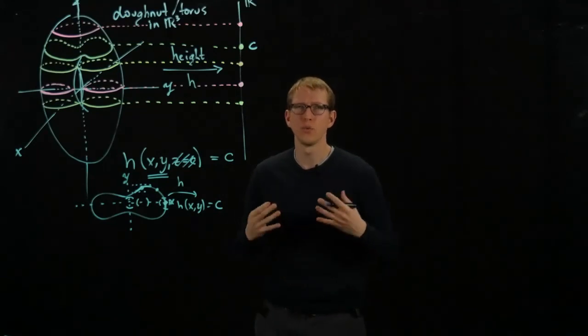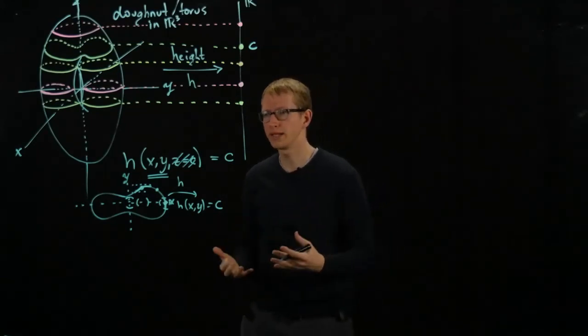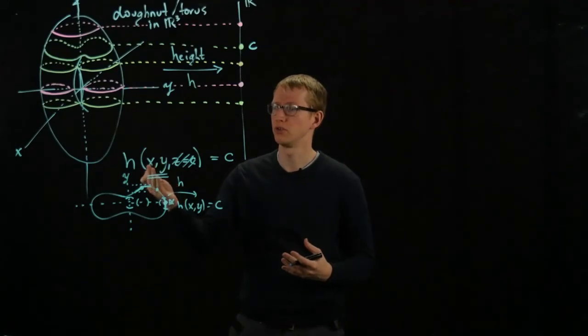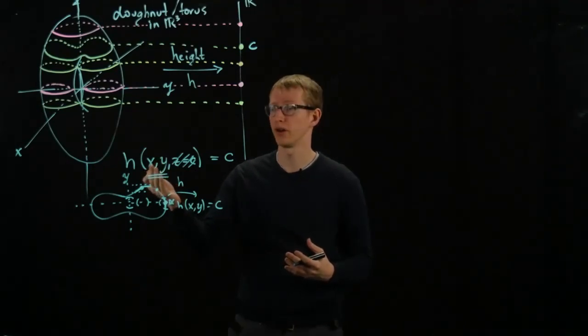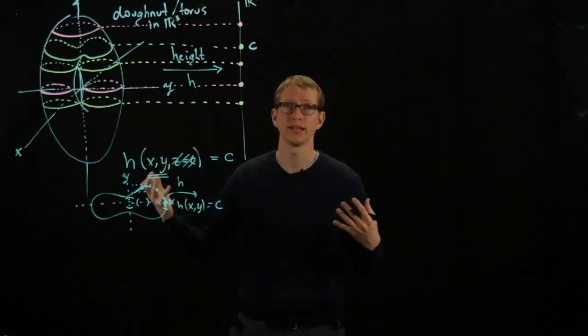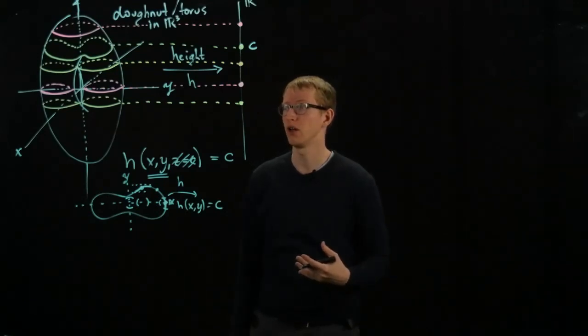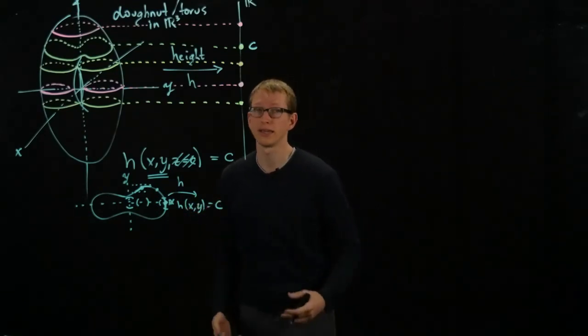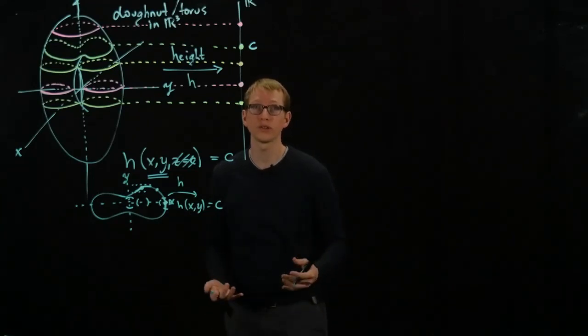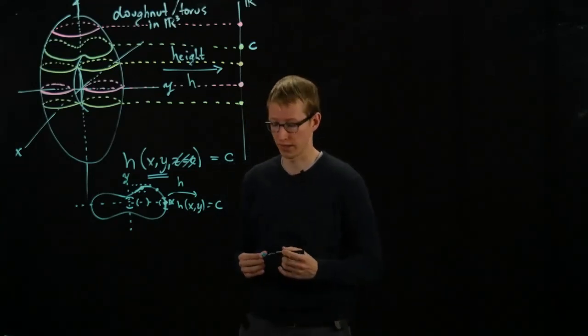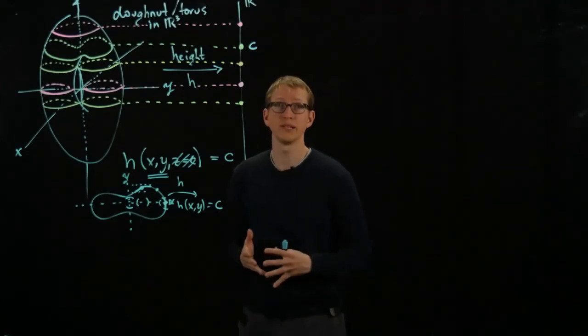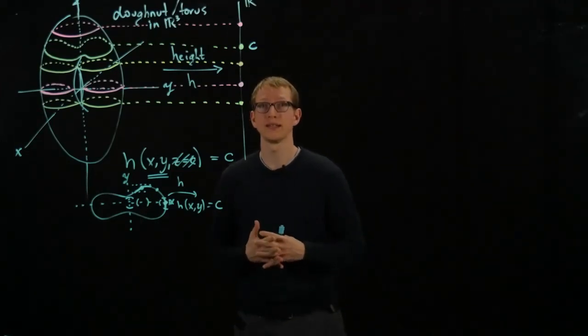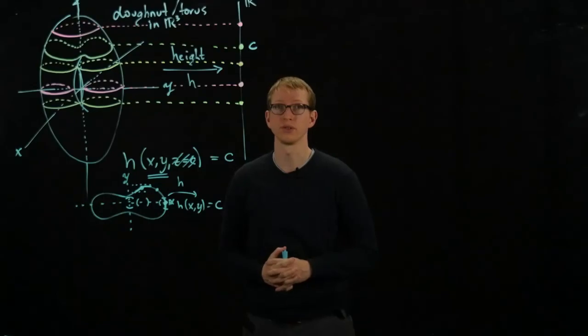And the question is, what exactly are these conditions? When can you do this? How general are these results? Do I, can I only do this for functions of two variables? What if I had 17 and I wanted to solve for, let's say, the first four in terms of the last 13? Can I do that? When can I do that? What are sufficient conditions that allow me to do that? And the implicit function theorem is going to exactly describe to us what these assumptions are.